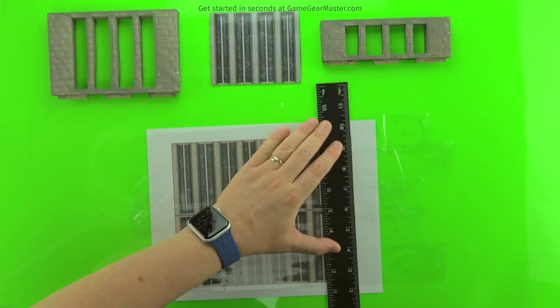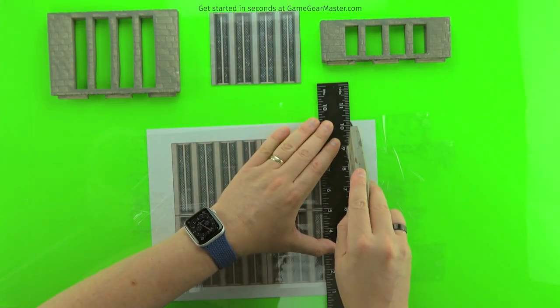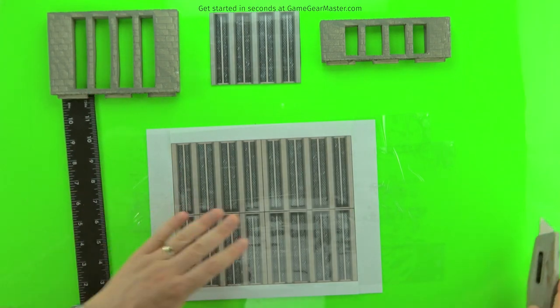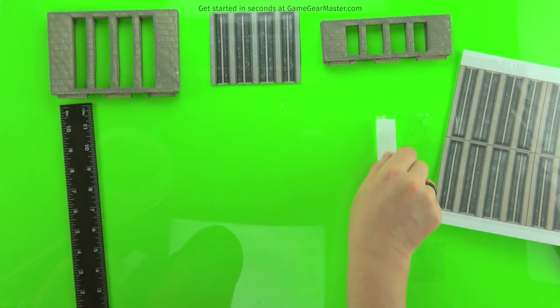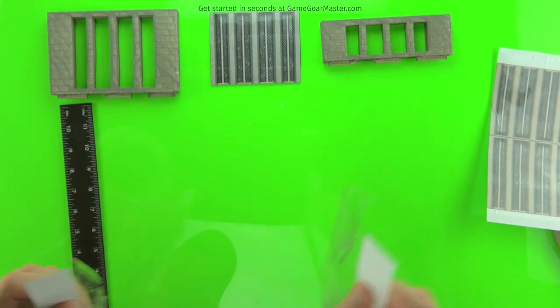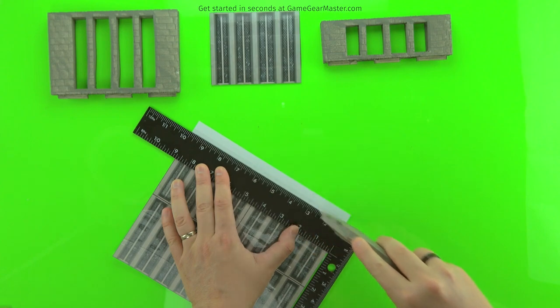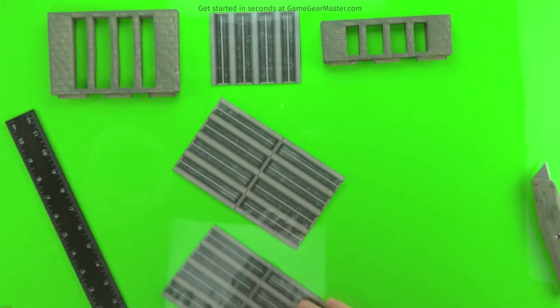So you just cut out the window pieces. And in doing that, you make it really easy to get your tape off your work surface. Just peel it off. And then once you've got it cut out, you just fold them in half just like you did for the regular printouts.